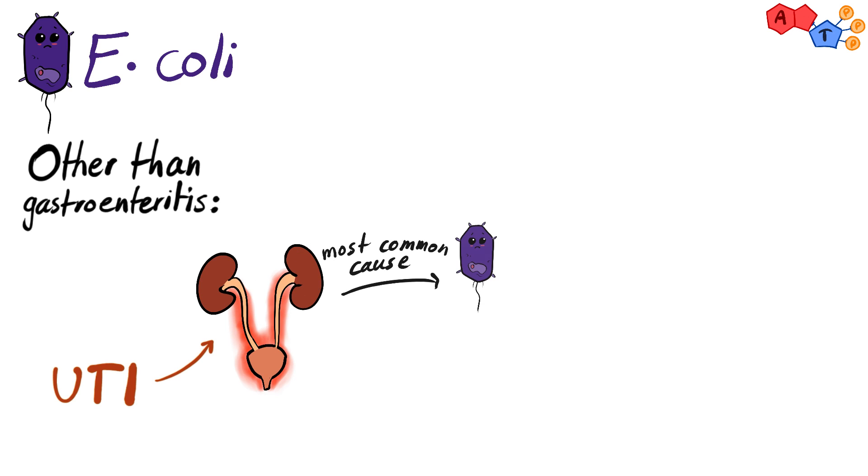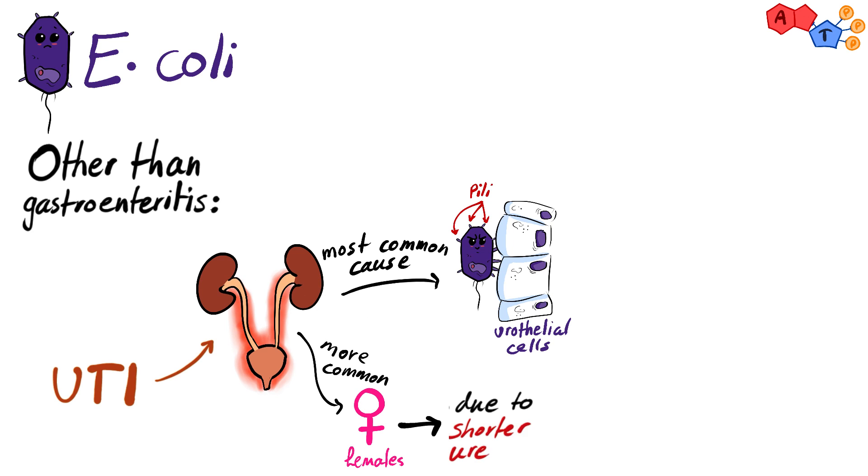Actually, E. coli is the most common cause of UTI, and it uses the pili to adhere to the urothelial surface. It's more common in females because they have a shorter urethra.